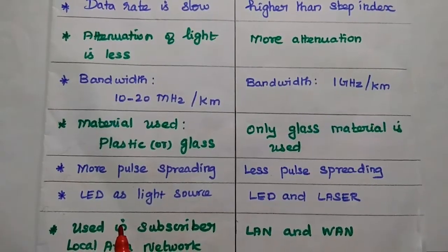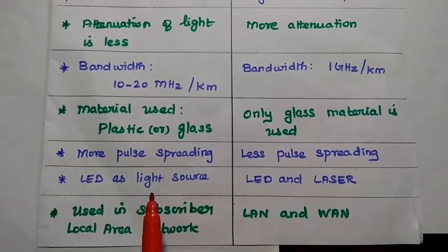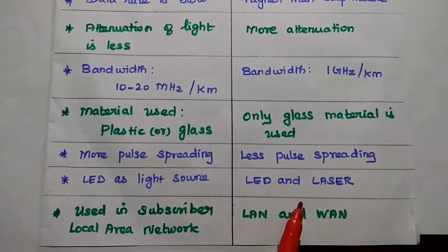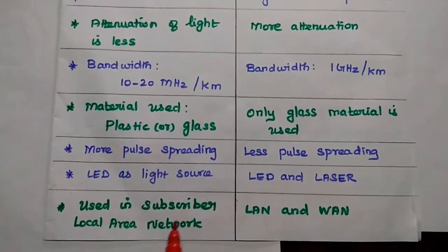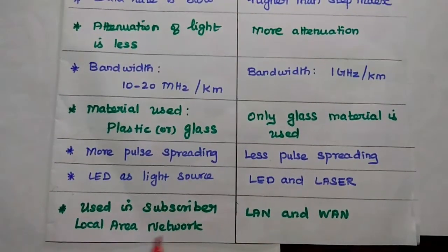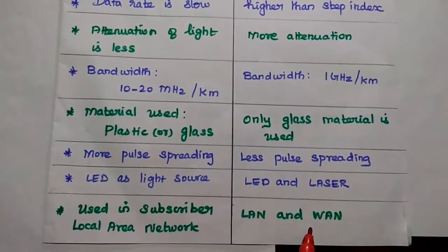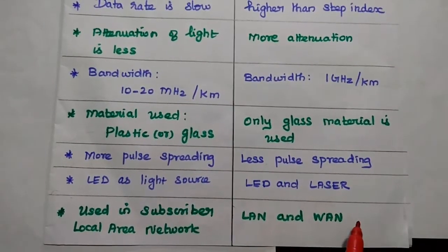Here the launching of light can be done only with the LED as a light source. Here LED and laser both can be used. This step index fiber is widely used in subscriber local area network, that is LAN. But this graded index can be used in LAN as well as WAN, that is wide area network.